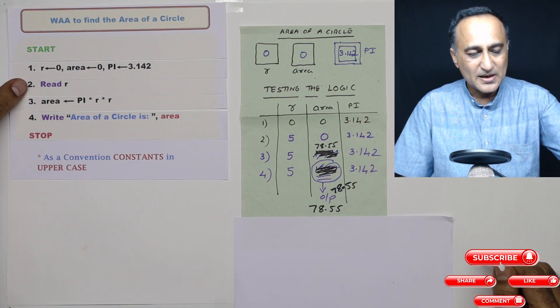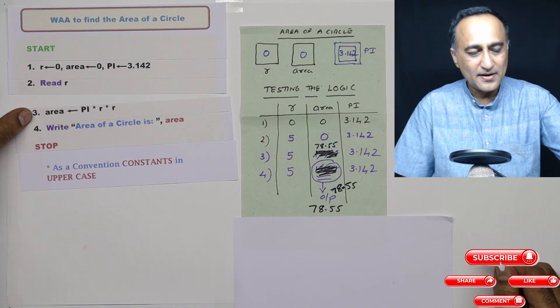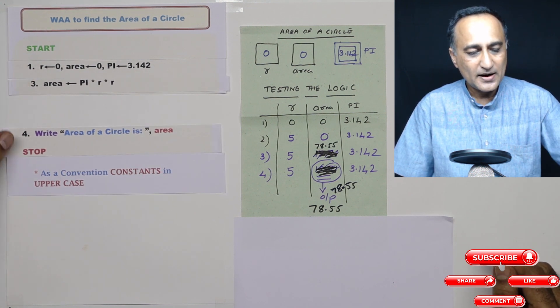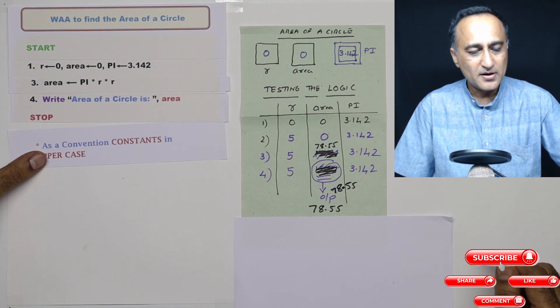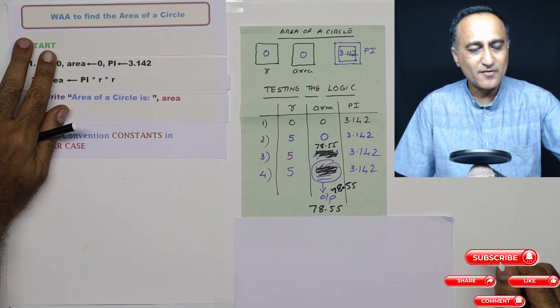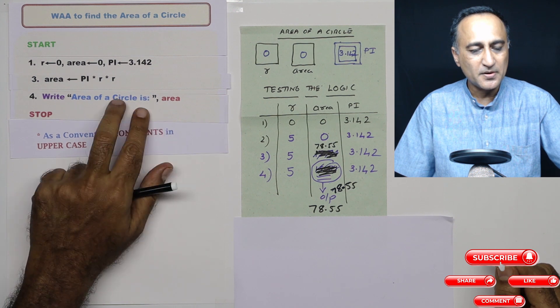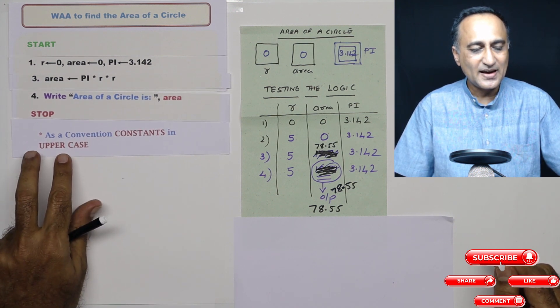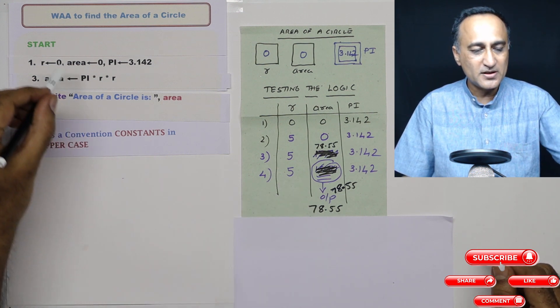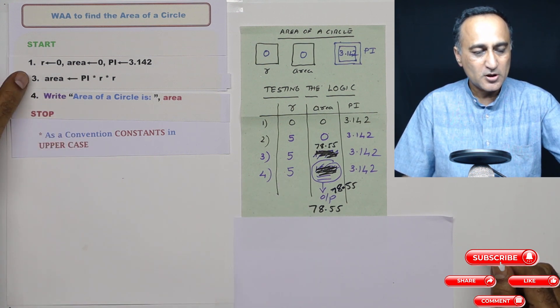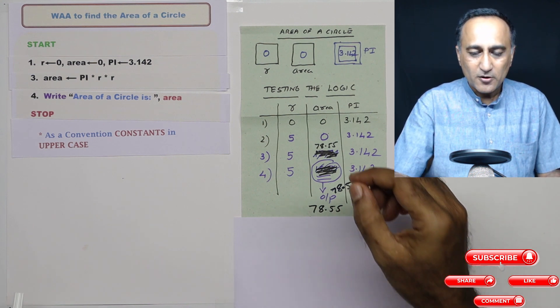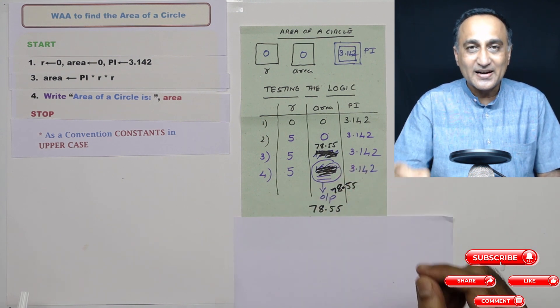For example, if I had done some mistake, I had calculated the area here and I had forgotten to read, what would have printed here? You would have got output of zero being printed as area of a circle. Now obviously, zero is not a correct answer. So then you will immediately know there is something wrong in your logic. So please follow some basic good practices. This way of testing your logic is known as dry run.